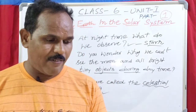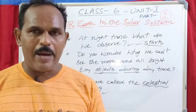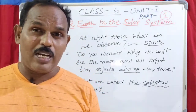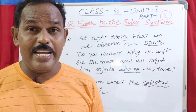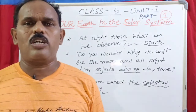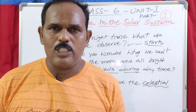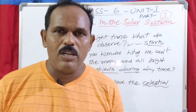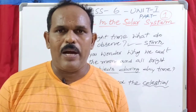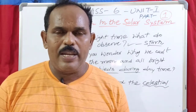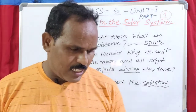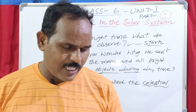The moon that we see in the sky is a satellite. Moon is a natural satellite. There are also artificial satellites. It is the companion of the Earth and moves around it. Like our Earth, there are seven other planets, making eight planets in total.